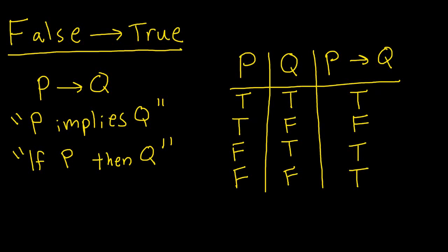Now most people are completely fine with this truth table, but there's one row that confuses a lot of people, and it's this third row — that false implies true is true.